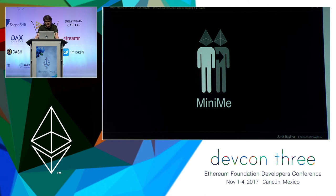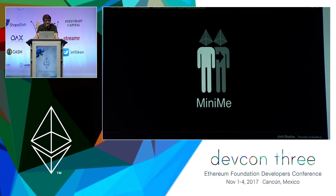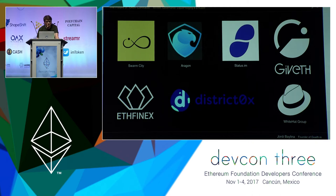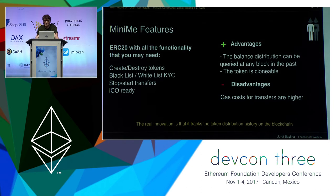Let's start with the MiniMe contract. MiniMe has been developed a year ago. It follows the ERC20 token standard and has been used extensively by many important projects in the Ethereum space. Here you can see some of these projects: Swamp City, Aragon, Status, Giveth, District 0x, and many others.